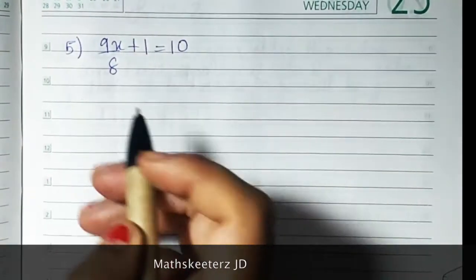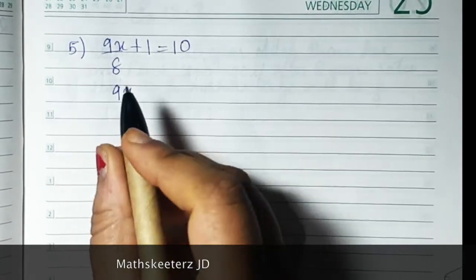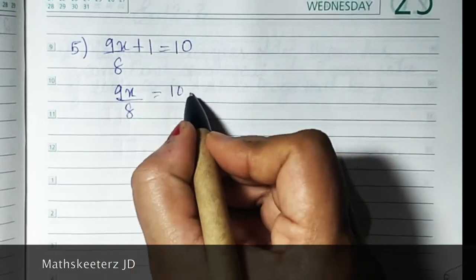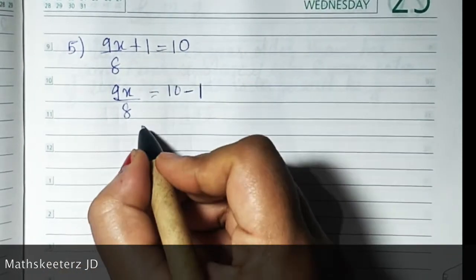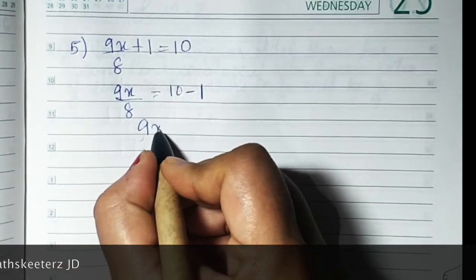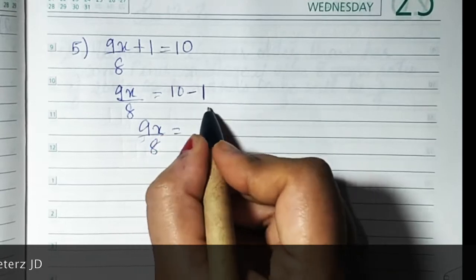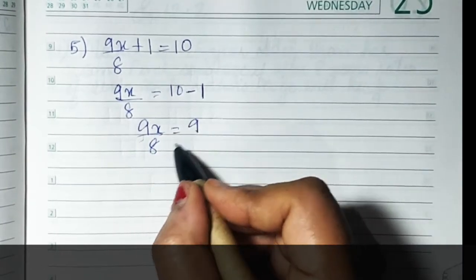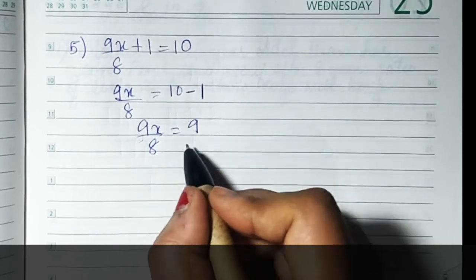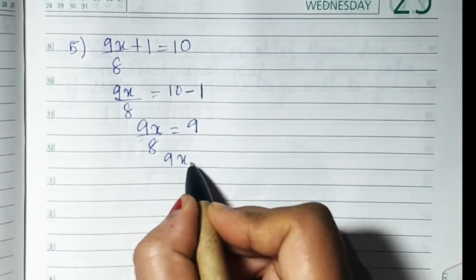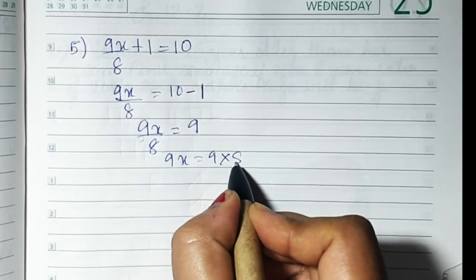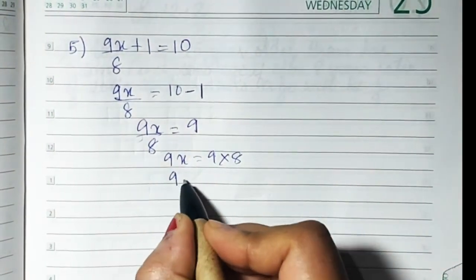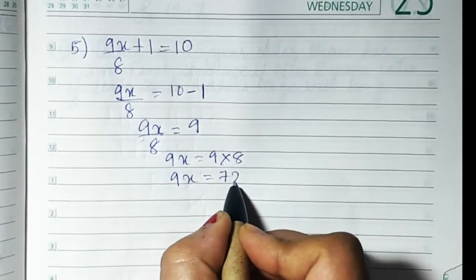This plus 1 goes to the other side and becomes minus 1. So 9x upon 8 equals 10 minus 1, which is 9. Now, 8 is divided here — it crosses the equal sign and becomes multiplied. So 9x equals 9 multiplied by 8, which is 72.